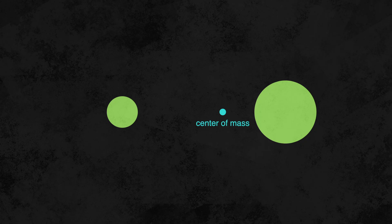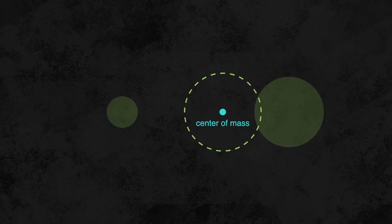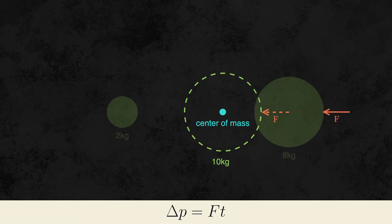We can think of a system as some composite object that's located at the center of mass, with a mass equal to the total mass of the system. This object obeys Newton's laws, including Newton's second law, F equals ma. Since impulse is calculated with force, we could use Newton's second law to calculate the effect of an impulse on the system.